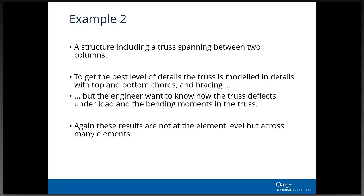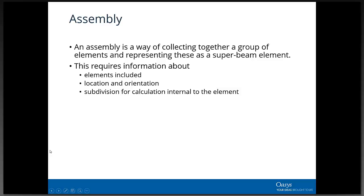Another example is a truss spanning between columns. You could model it as a single beam element, or in more detail with top and bottom chords and bracing elements. That gives the best detail of what's happening in the truss. But you might just want to know how it's deflecting under load, or what bending moments there are in the truss as a whole - looking across lots of elements rather than at the element level. An assembly acts like a 'superbeam': something like a beam element but modeled by a whole group of elements.